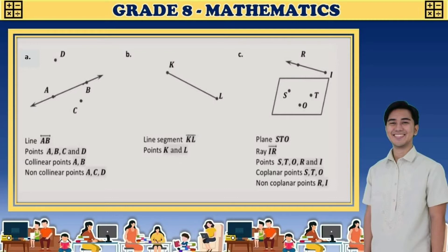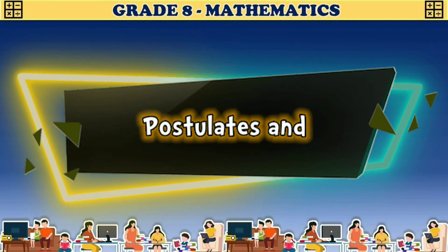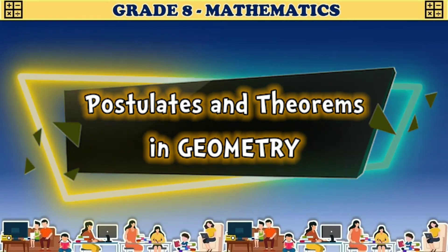In letter C, we have plane STO and ray IR, with points S, T, O, R, and I. The coplanar points are S, T, and O — these are the points that lie on the same plane. The non-coplanar points are point R and point I, which do not lie on the same plane. Now let's discuss postulates and theorems in geometry.